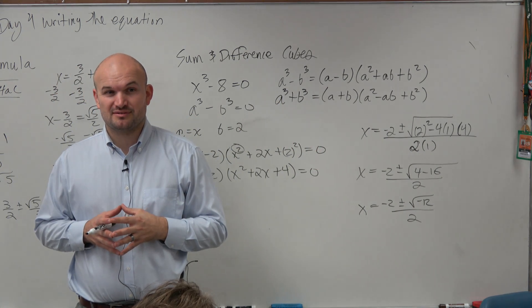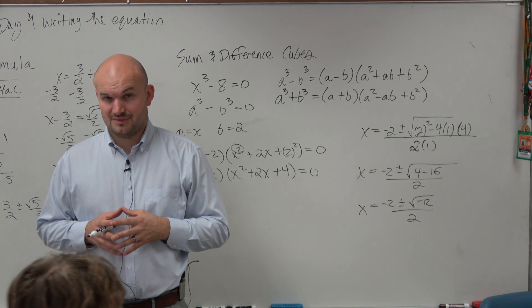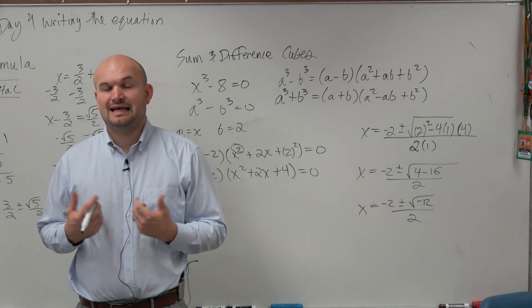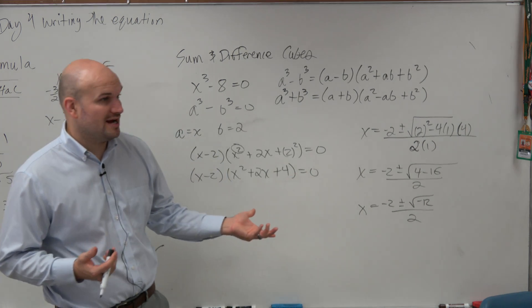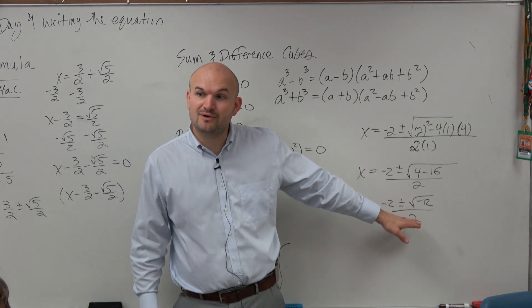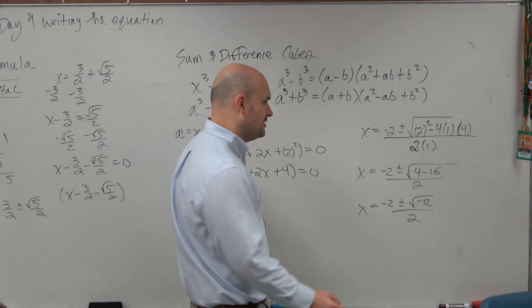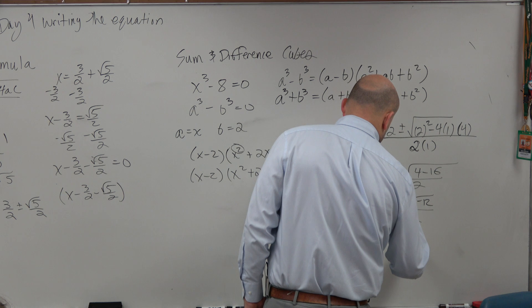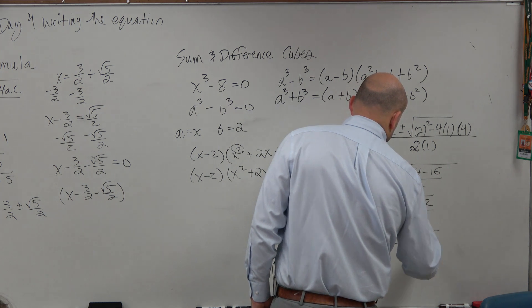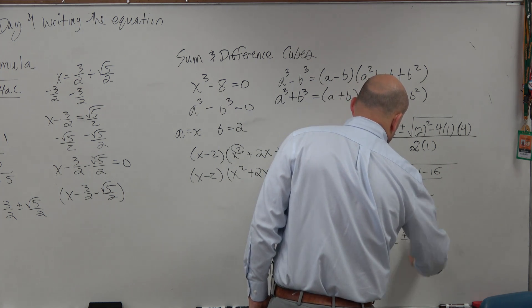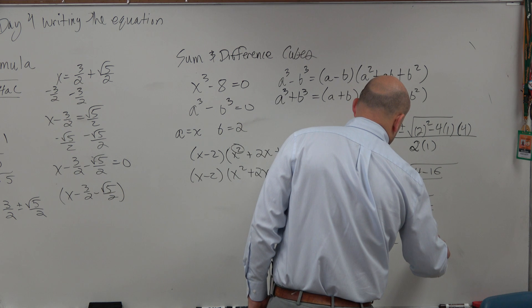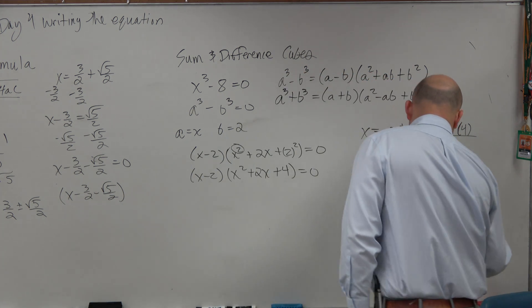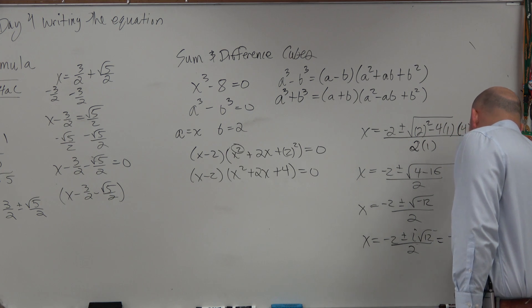So we have negative 2 plus or minus the square root of negative 12 divided by 2. Well, guess what? We already have irrational, but now we have irrational with the square root of negative 12. So I'm just going to rewrite that with i square root of 12 over 2. And I could simplify the radical, but I'm going to go through that.